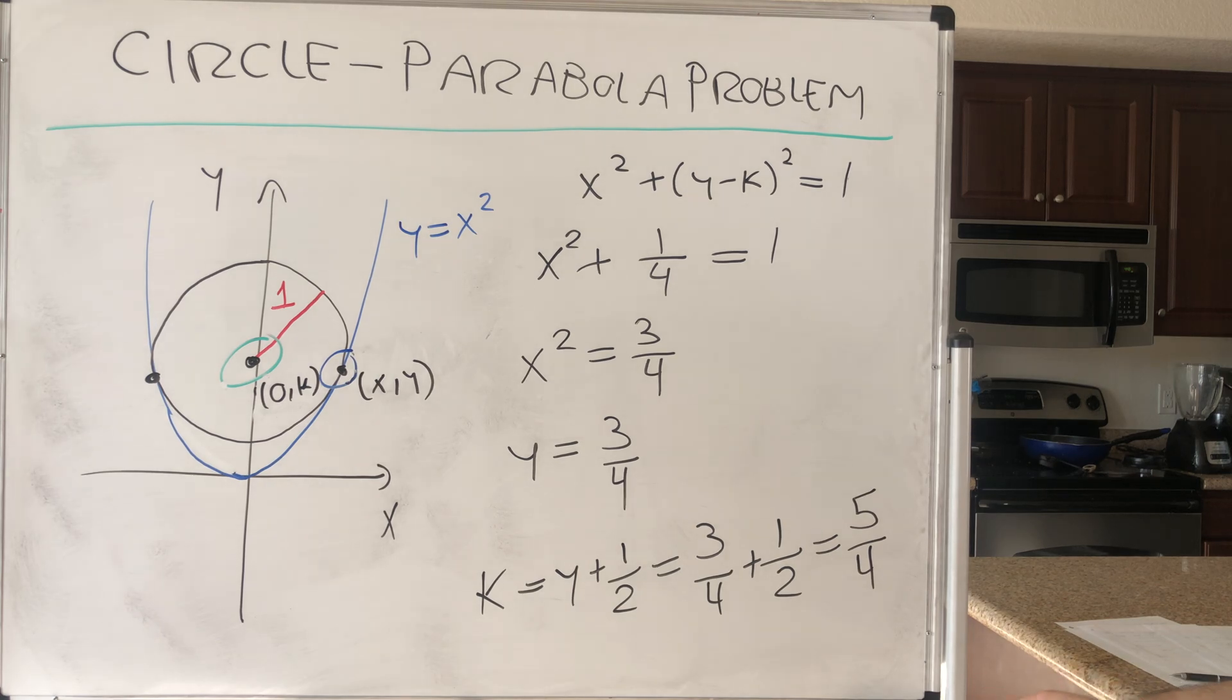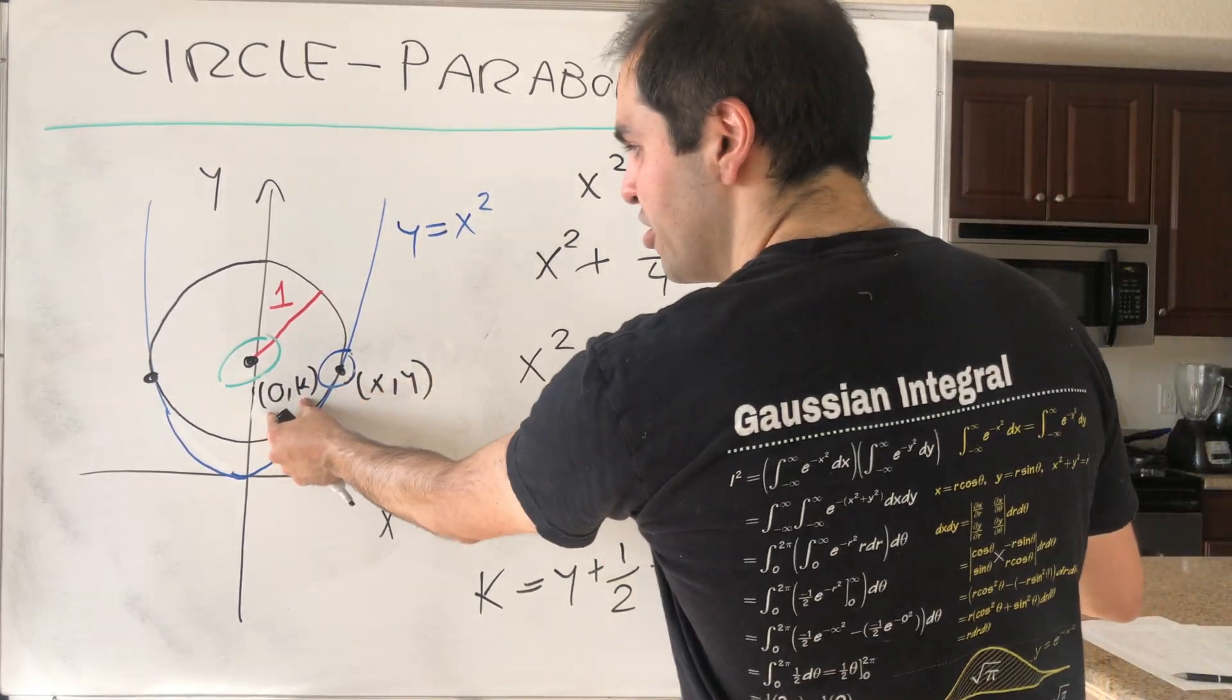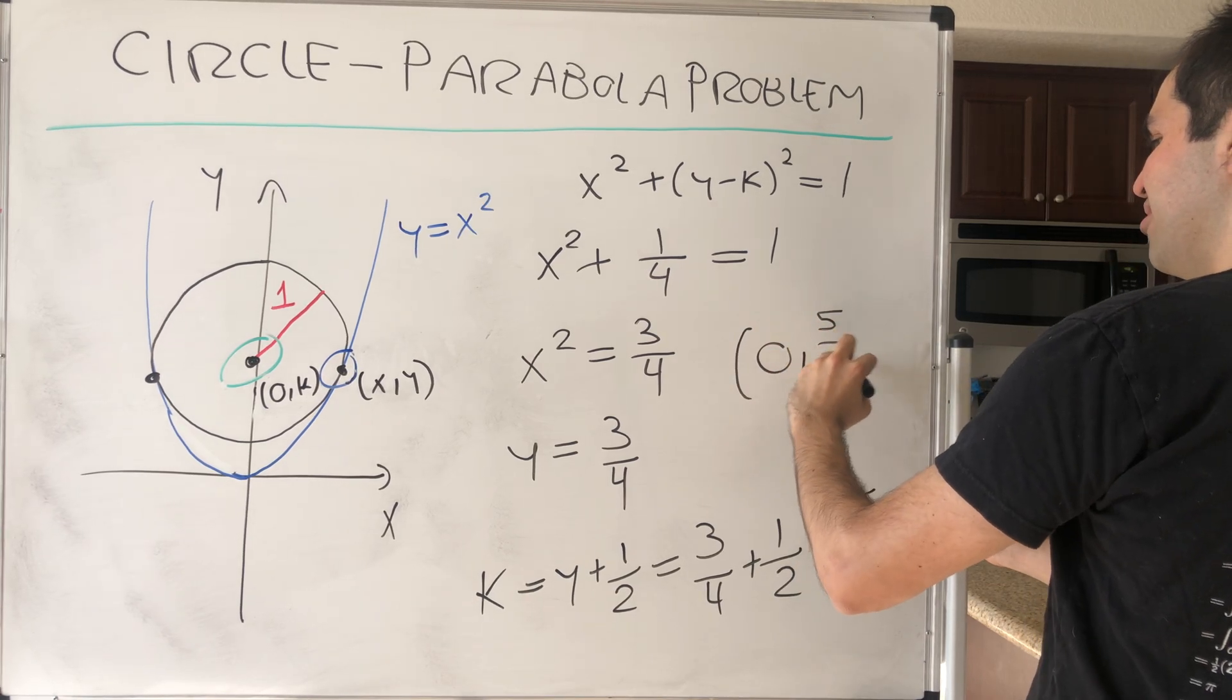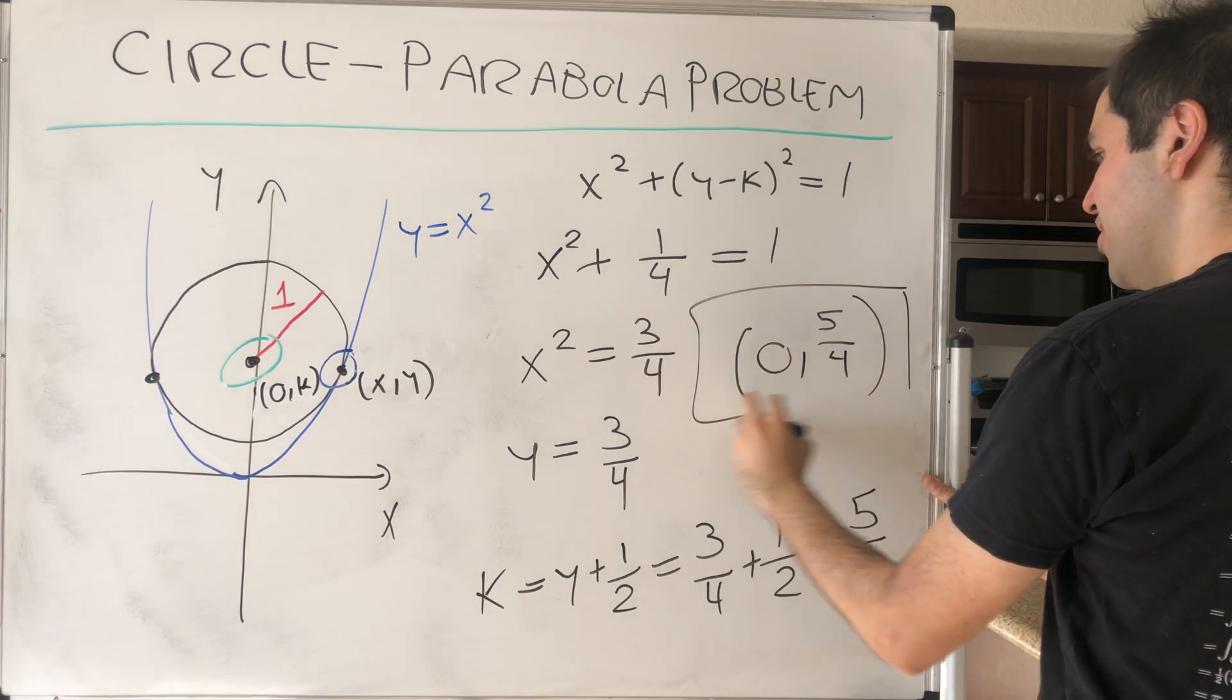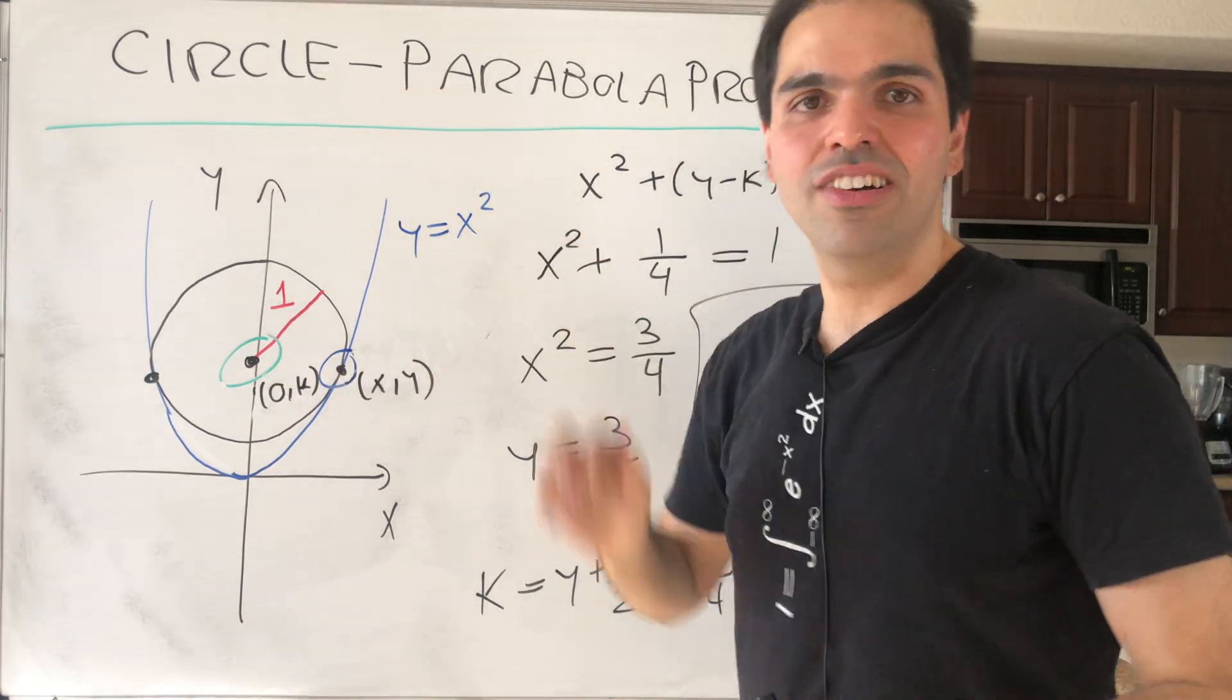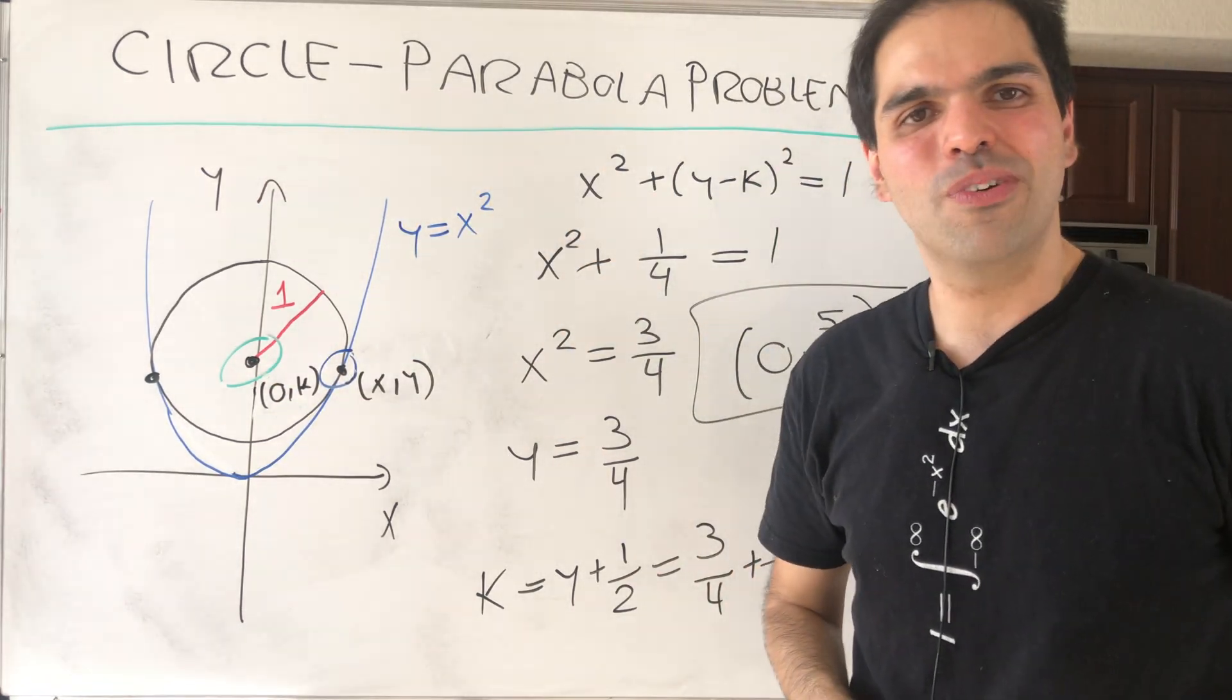So k is 5/4. And then what is our answer? It's (0, k), which is (0, 5/4). So exactly at the point (0, 5/4), we get that this circle is tangent to the parabola at two points.